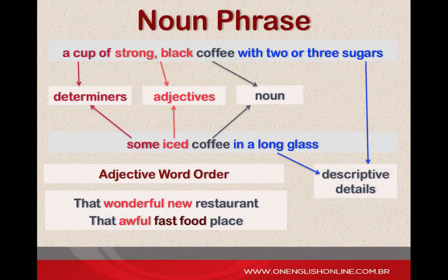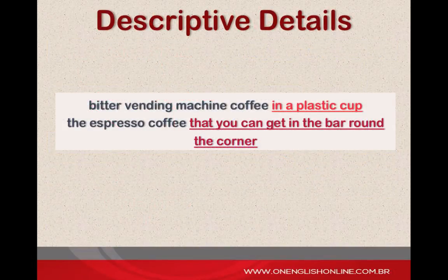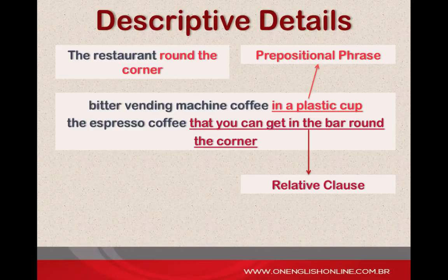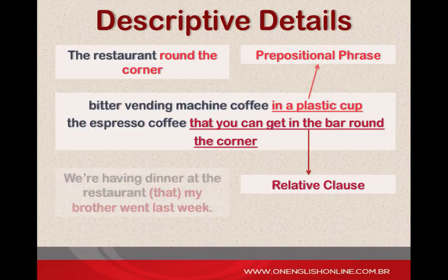And finally, after the noun, additional descriptive details. Longer phrases giving more descriptive details go after the noun. There is also a fixed order to add descriptive details. This description after the noun can either be a prepositional phrase or a relative clause. Pay attention: when the relative pronoun — which, that, who — is the object of the clause, you can omit it.